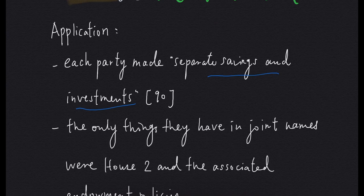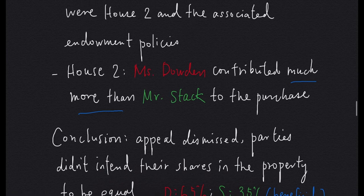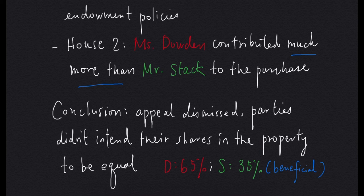Lady Hale observes that Mr. Stagg and Ms. Dalton each made separate savings and investments. The only things they had in joint names were the house and associated endowment policies. Another observation Lady Hale made is that Ms. Dalton in fact contributed much more than Mr. Stagg to the purchase. In conclusion, Lady Hale held that the parties didn't intend their shares in the property to be equal, so the appeal should be dismissed. Ms. Dalton should get 65% of the beneficial interest and Mr. Stagg should get 35% of it. This is how common intention constructive trust should be applied in the co-ownership context.